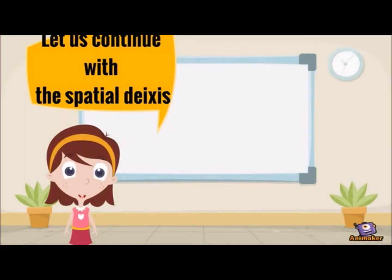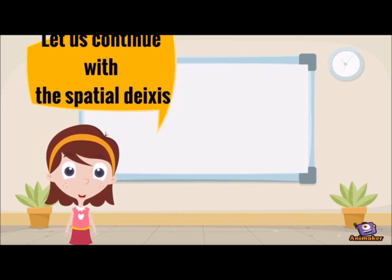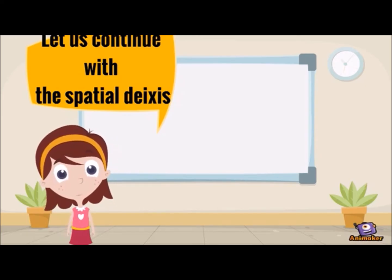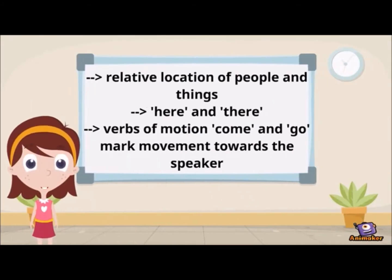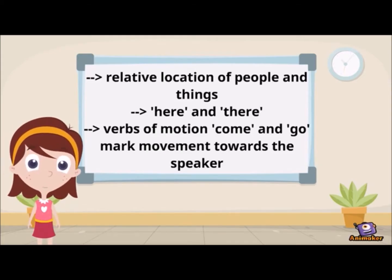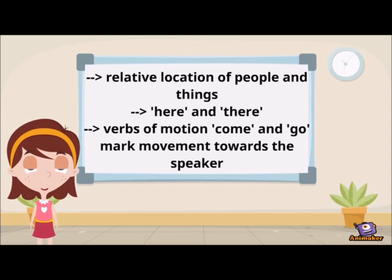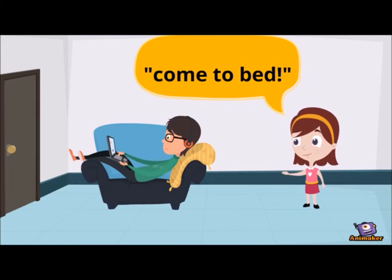The concept of distance already mentioned is relevant to spatial deixis, where the relative location of people and things is being indicated. Contemporary English makes use of only two adverbs — here and there — for the basic distinction. Some verbs of motion such as come and go retain a deictic sense when used to mark movement towards the speaker, for example 'come to bed'.